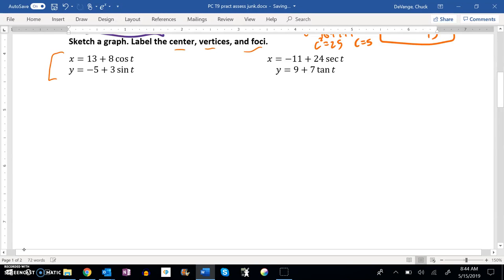Great, so let's read this. This is cosine and sine, so it's going to be an ellipse. There's my center right there. So I have a center right here at 13 negative 5.